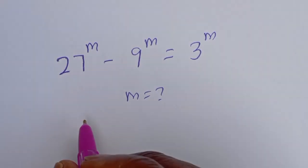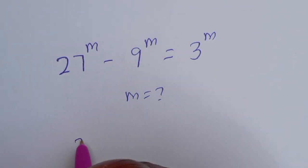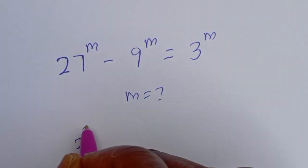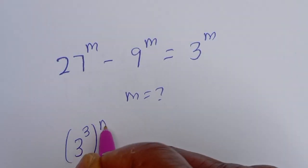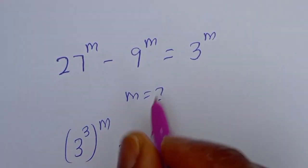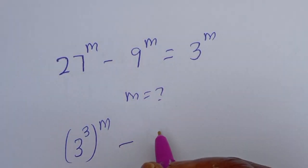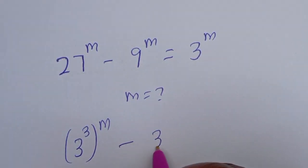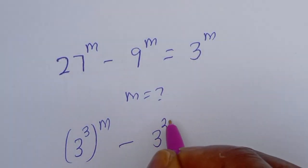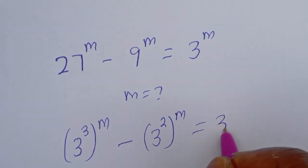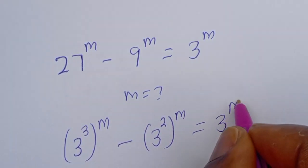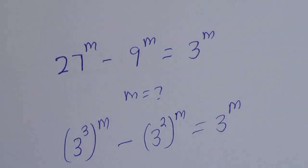27 to the power of M can be written as 3 cubed to the power of M, and 9 to the power of M can be written as 3 squared to the power of M, and this is equal to 3 to the power of M.